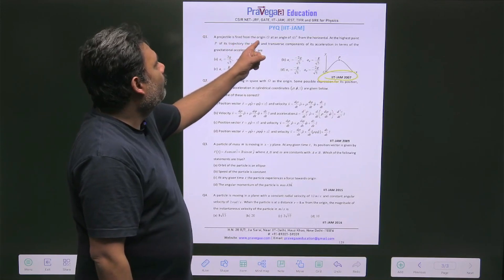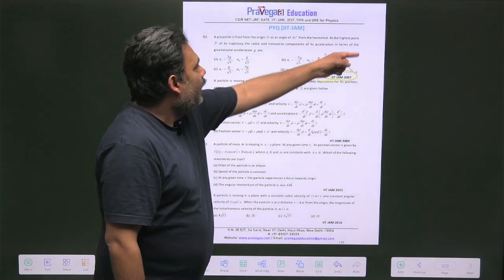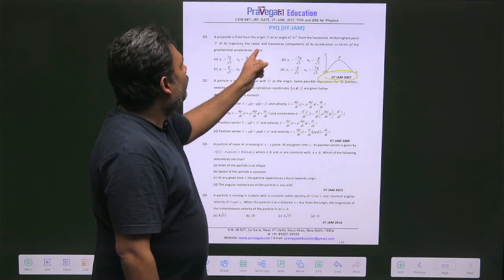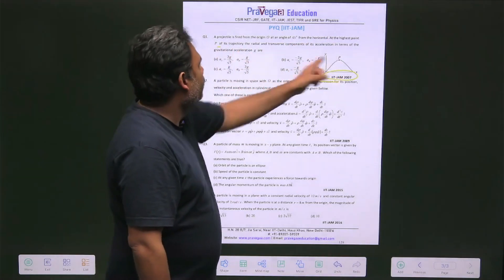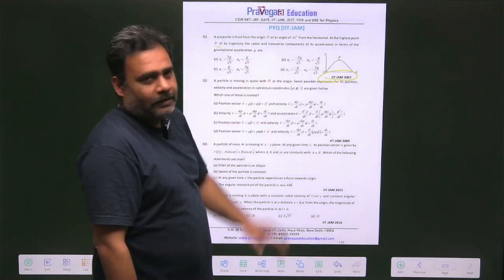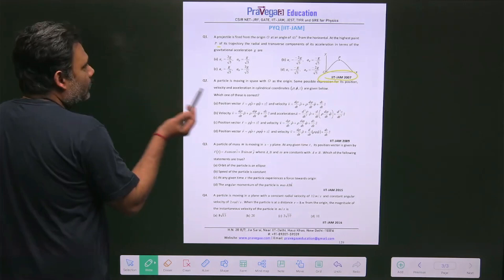A projectile is fired from the origin O at the angle 45 degree from the horizontal. At the highest point P of its trajectory, the radial and at the highest point P of the trajectory you have to find the radial and transverse component of acceleration. The exactly same question is there also.